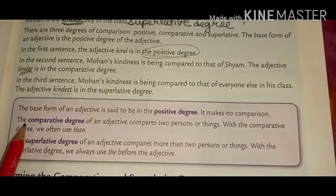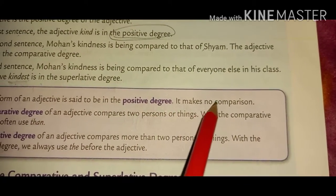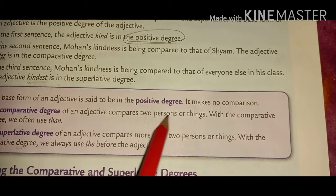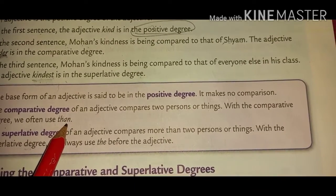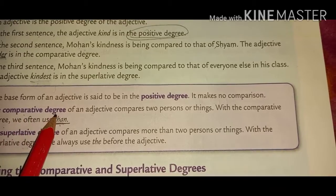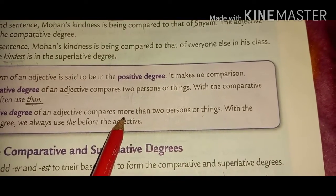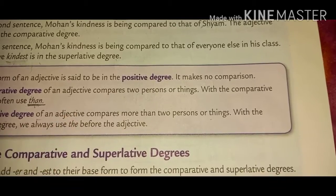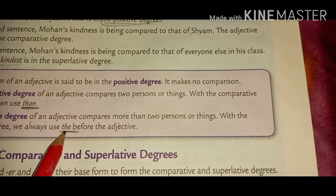Here are the definitions, children. You have to write them. The base form of an adjective is said to be in the positive degree — it makes no comparison. The comparative degree of an adjective compares two persons or things. With the comparative degree, we often use 'than.' The superlative degree of an adjective compares more than two persons or things. With the superlative degree, we always use 'the' before the adjective.